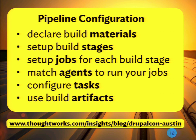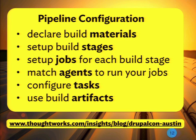We're going to drill right down into what a pipeline is conceptually — step by step — and how you implement it. There are six key concepts: what build materials are and how you declare them; how to set up build stages; how to set up jobs for each build stage; how to match up your agents with your jobs; how to configure tasks; and what build artifacts are and how you use them — trusted artifacts. With these six concepts, you can build a Go pipeline.